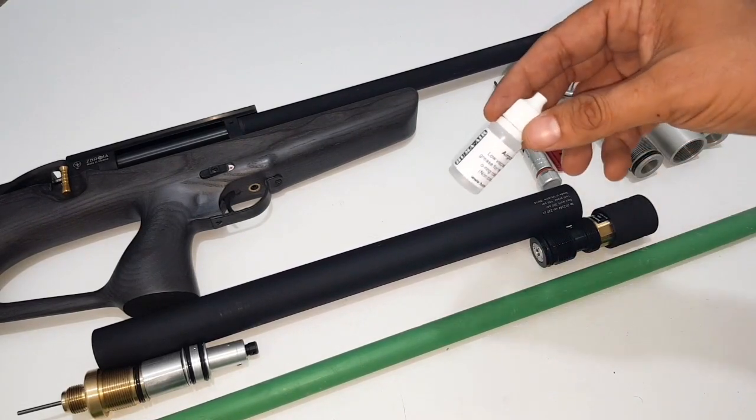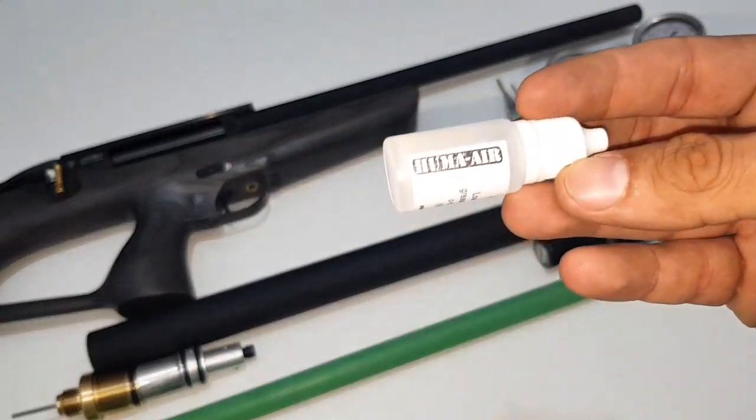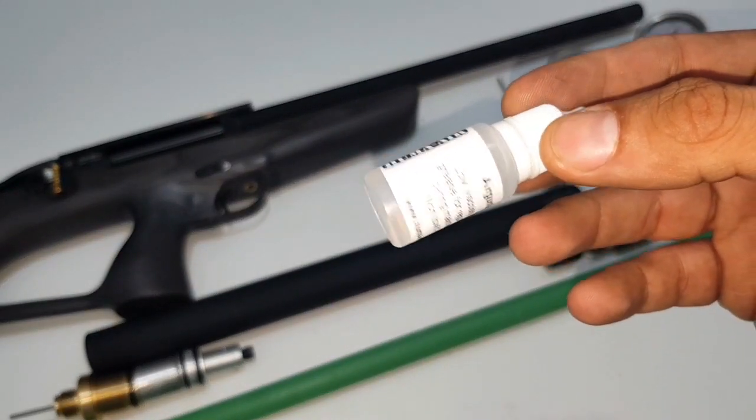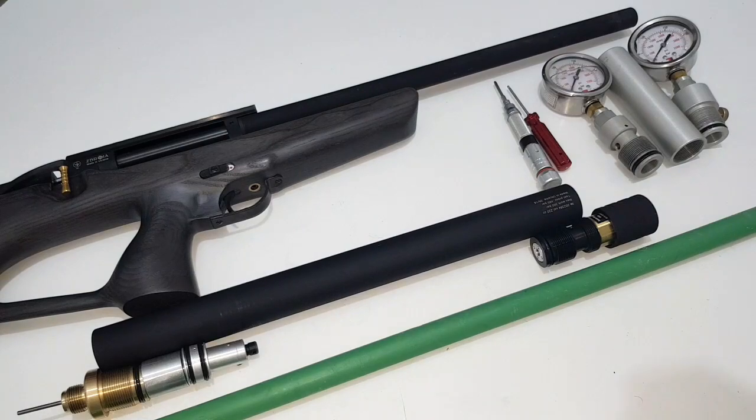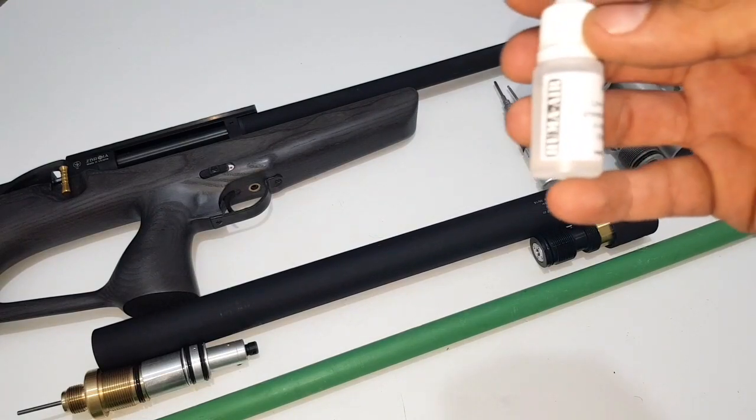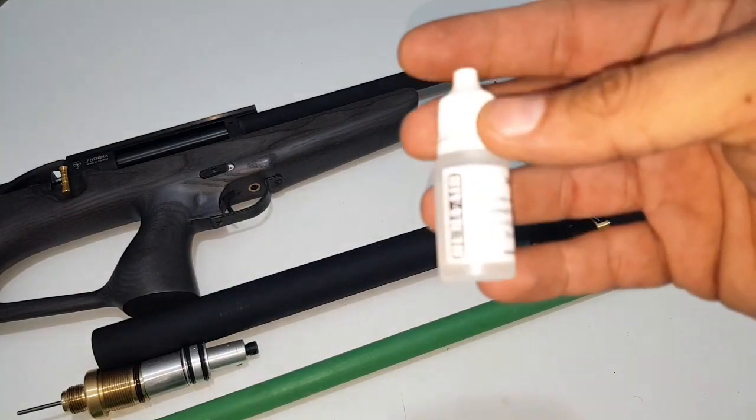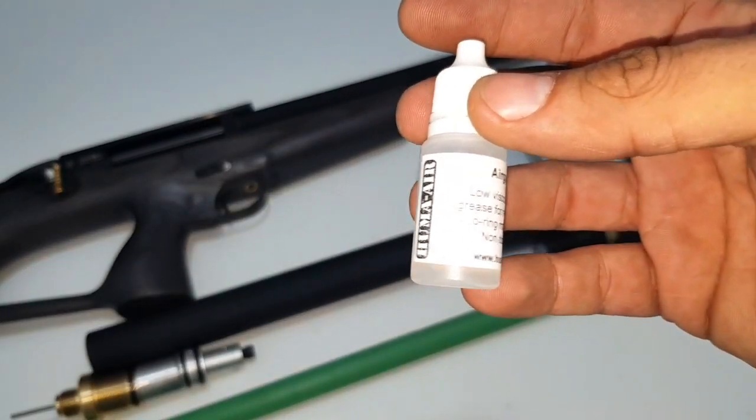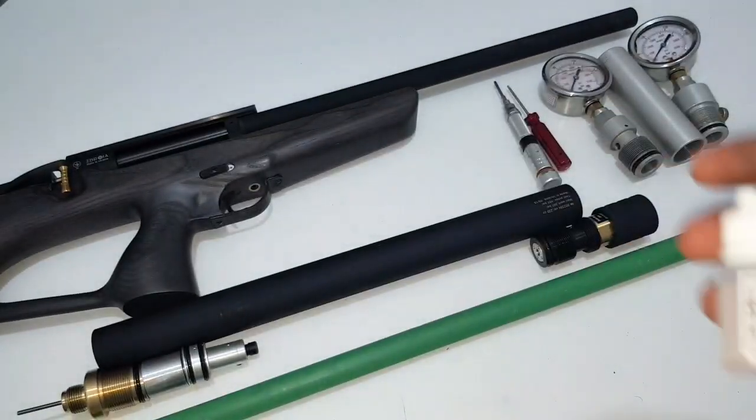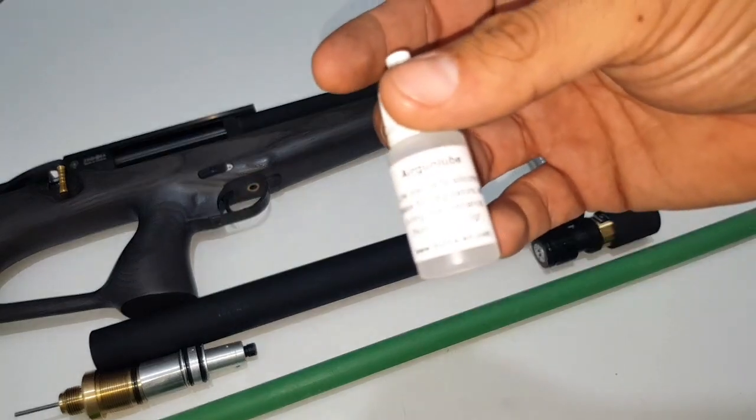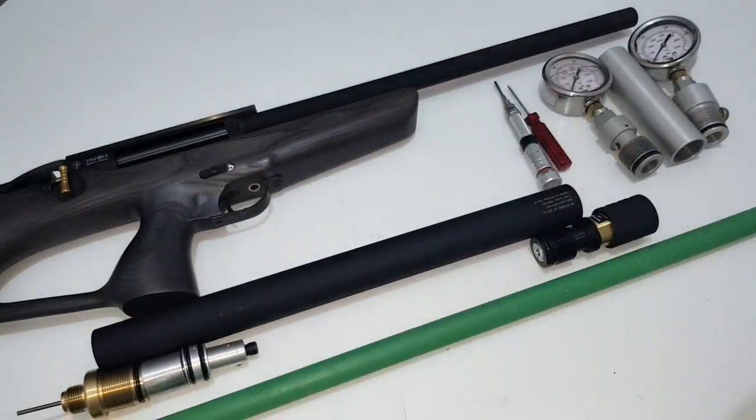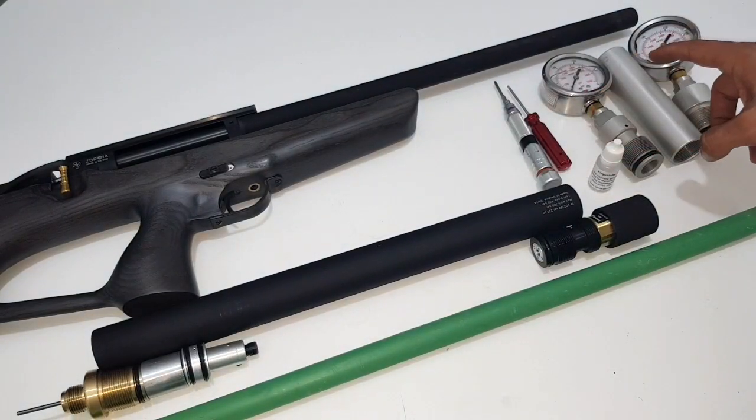Also, you need a decent silicone grease. I personally use the Huma product. They are low viscosity and work well on the O-rings, especially the reg O-rings. They're non-toxic and most importantly, this silicone grease is so cheap. Get access to their website and check it out.